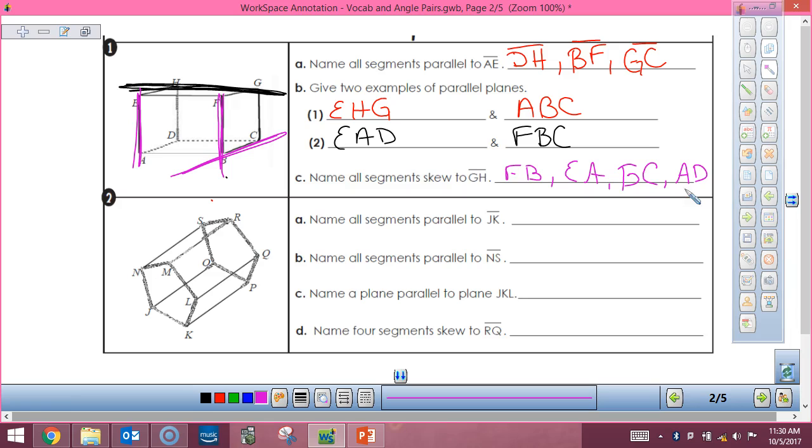So segments parallel to JK. So JK is this guy. So parallel, take a look at that. We need parallel to JK. OP, yep. Not bad work. Is there any other ones? I don't think so in that one.